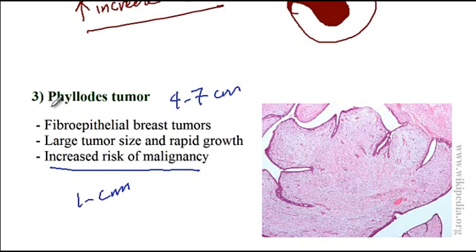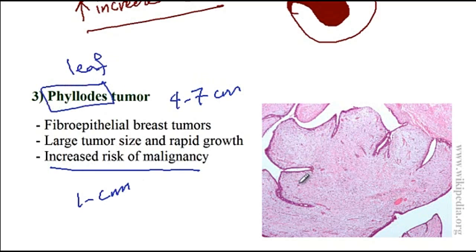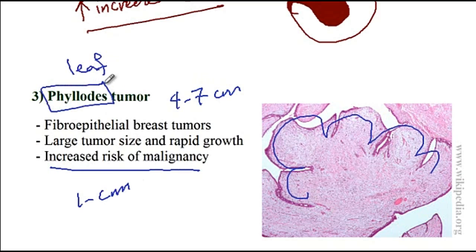The name 'phyllodes' is given to this tumor because 'phyllodes' itself means leaf, and this tumor has a leaf-like appearance. Phyllodes tumor has an increased risk of malignancy, so it is recommended to excise with one centimeter margins.